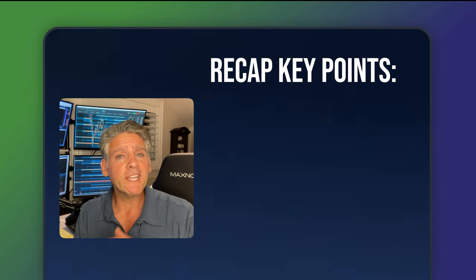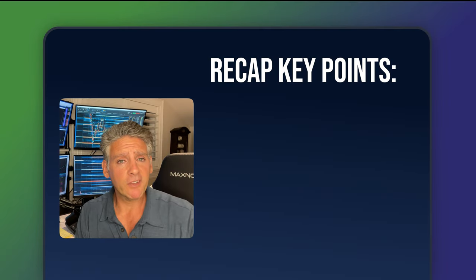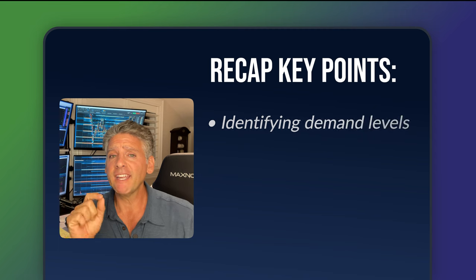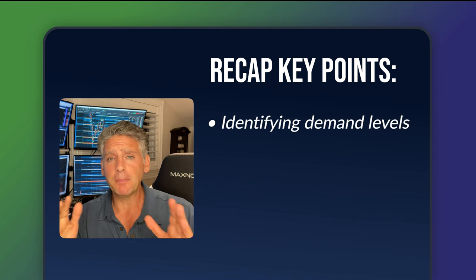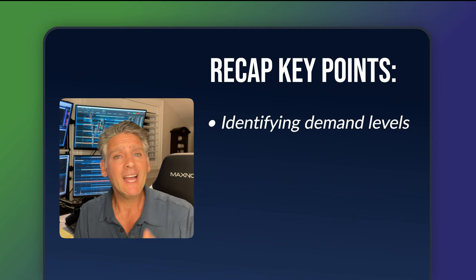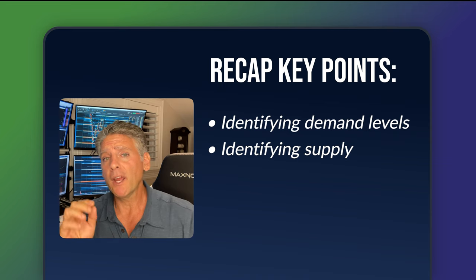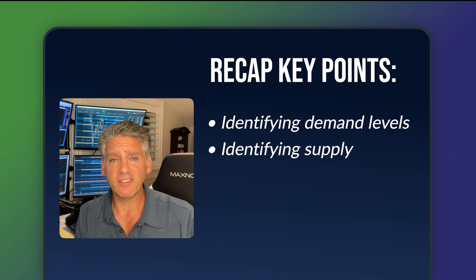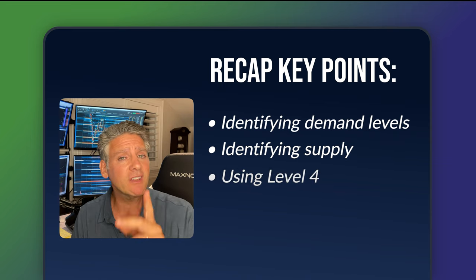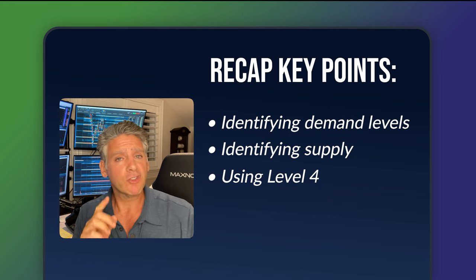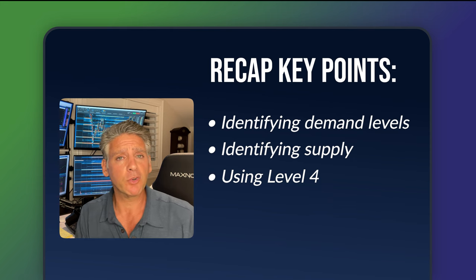Let's quickly recap the key points: identifying demand levels where price tends to bounce upward; identifying supply where price tends to drop; and most importantly, using Level 4 to track the big block iceberg orders for better market insight.